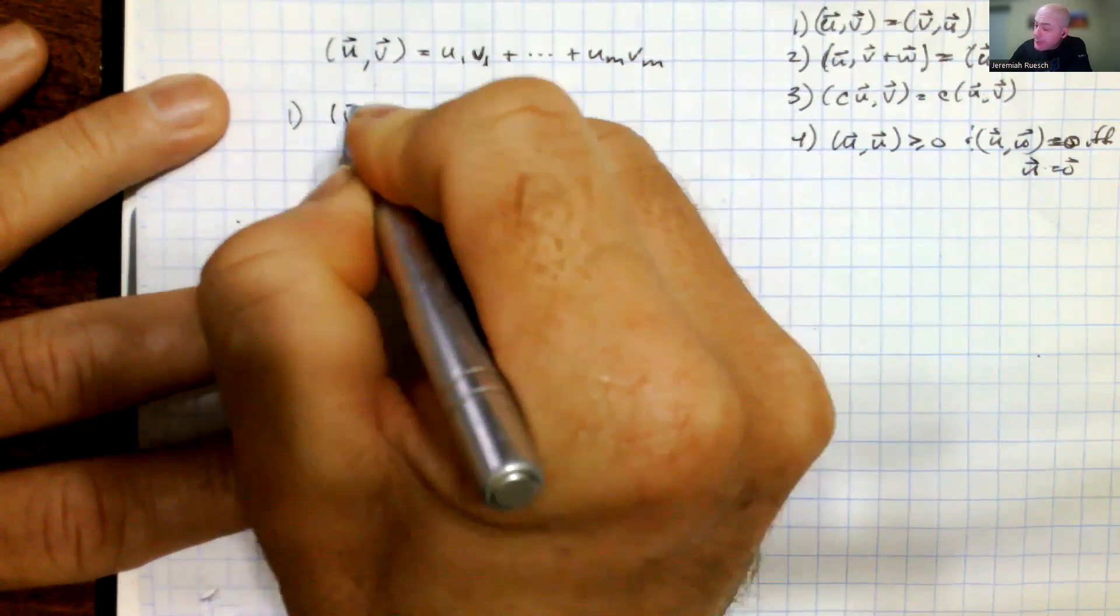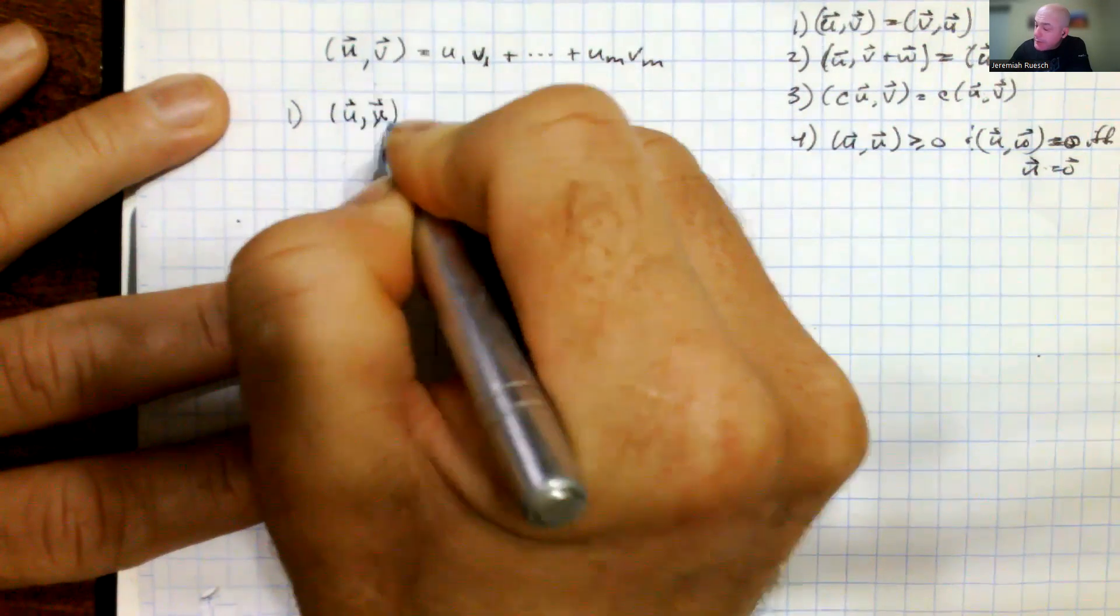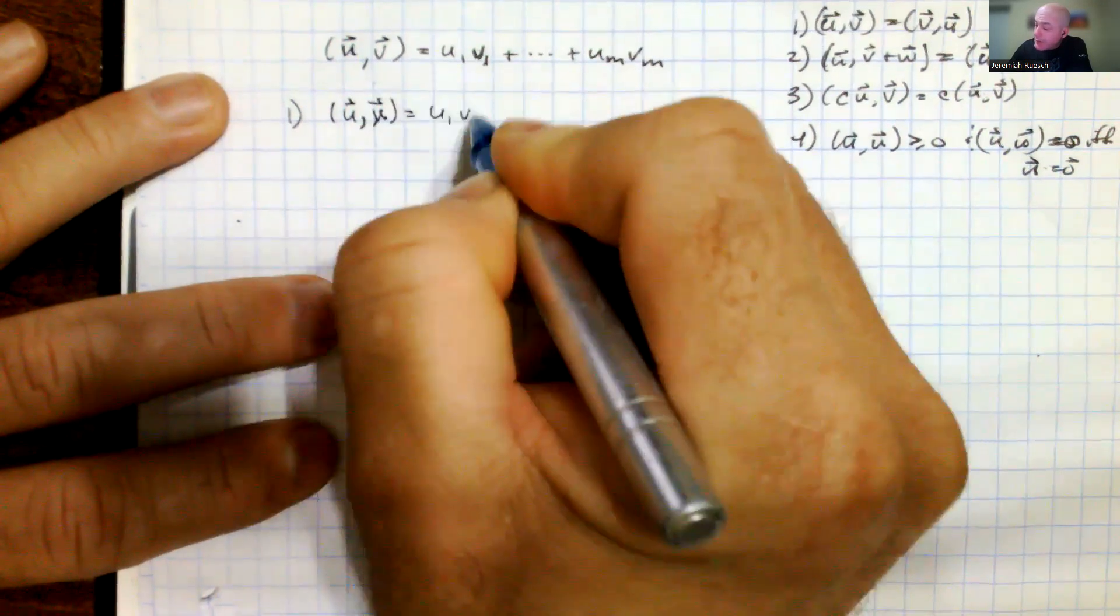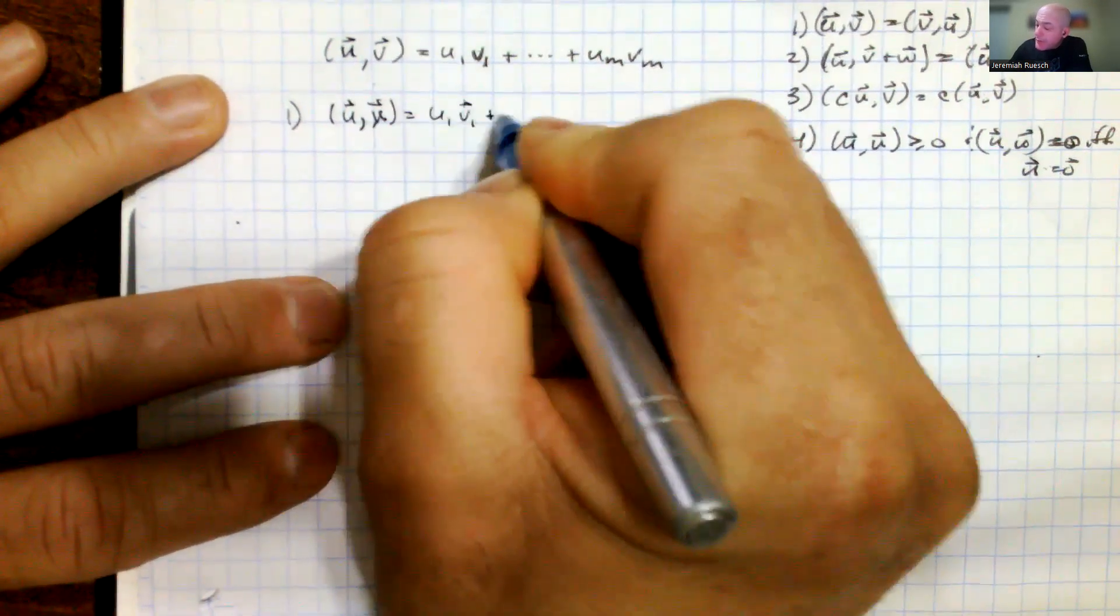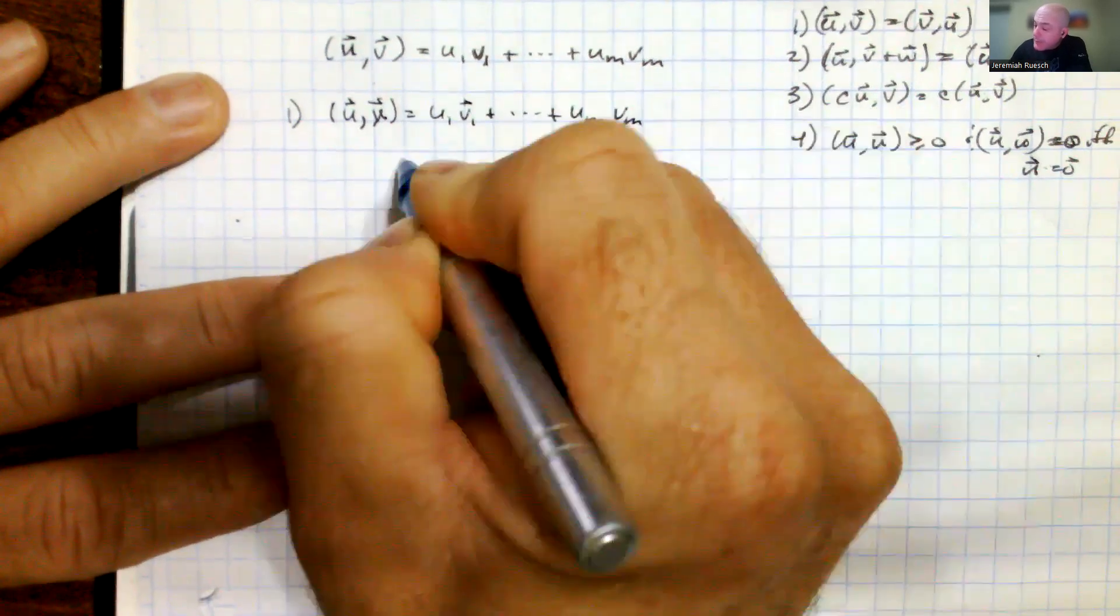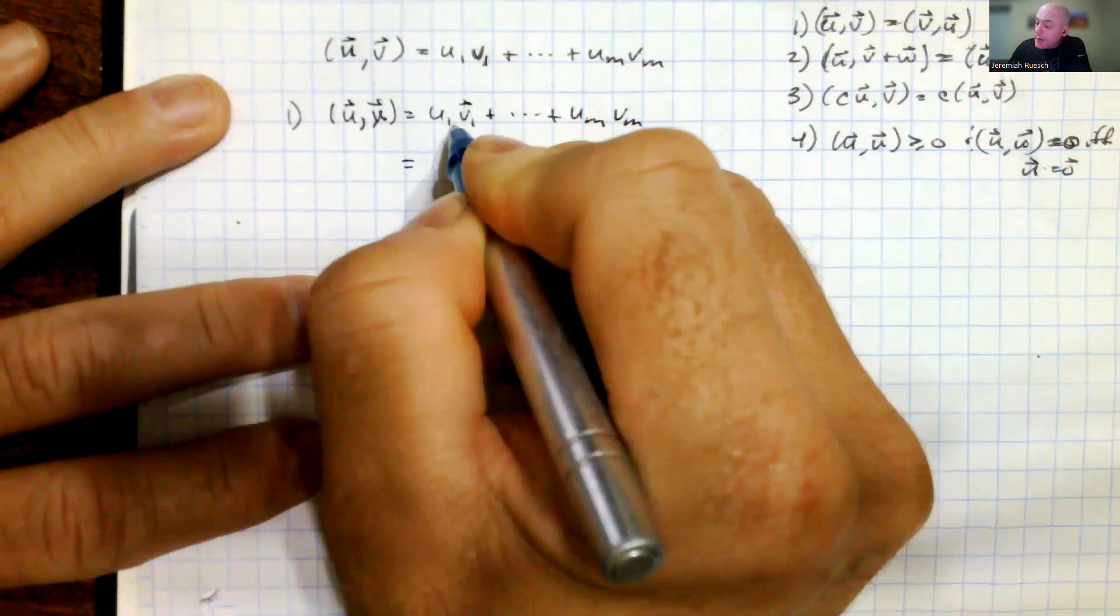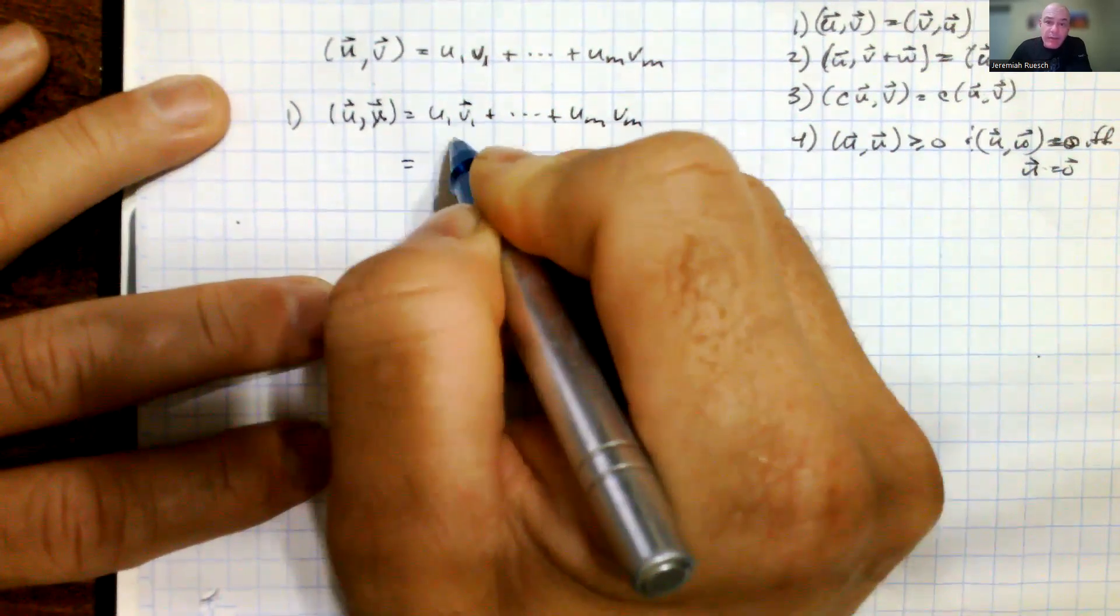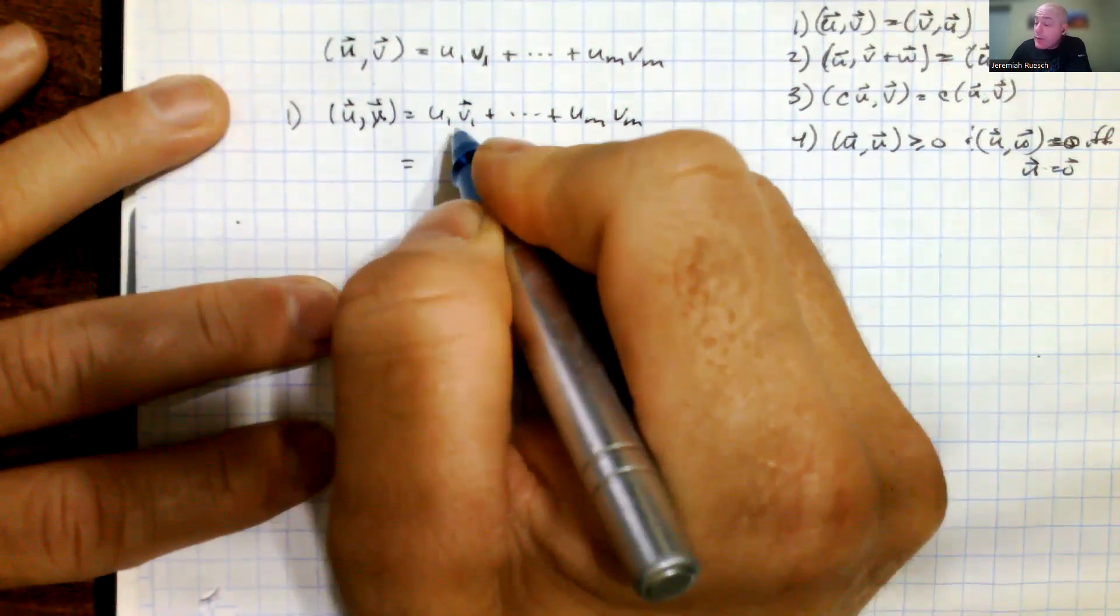So we have u and v, so it's going to equal u1 v1 plus dot dot dot plus um vm. And since each of these elements are coming from the reals, then we know that they are